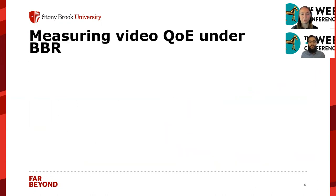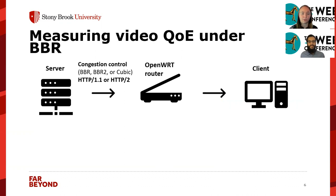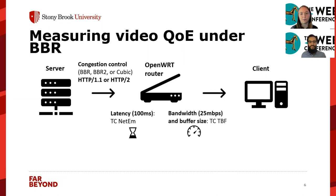Now let's talk about the experiments we did to measure video QoE under BBR. We have a private LAN setup where a server and client communicate over a router, and we also did experiments in the WAN. We set congestion control on the server to three options: BBR, BBR2, and cubic. We also set HTTP version to HTTP 1.1 and HTTP 2. On the router, we set latency at a default of 100 milliseconds and bandwidth at 25 megabits per second, and we configured a wide range of buffer sizes.